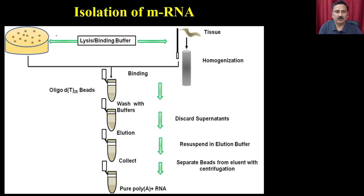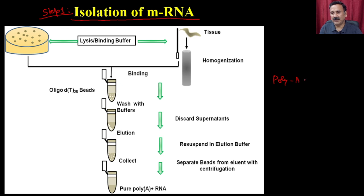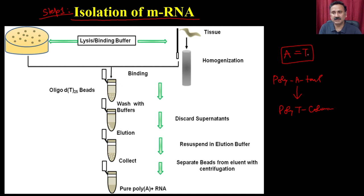These are the steps for isolation of messenger RNA — step one in the construction of the cDNA library. Exploiting the structure of the messenger RNA, you use the poly-A tail, which has very high affinity for poly-T columns, because A has complementary affinity for T. A poly-T column will specifically capture all messenger RNA carrying a poly-A tail.